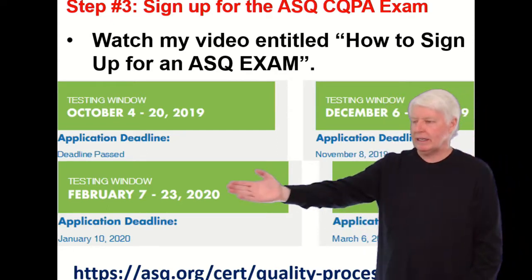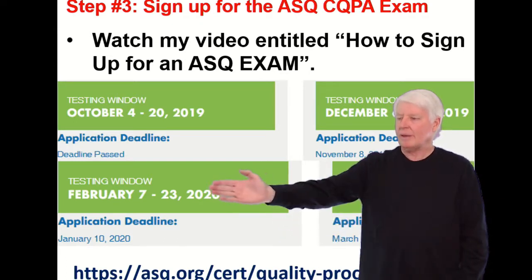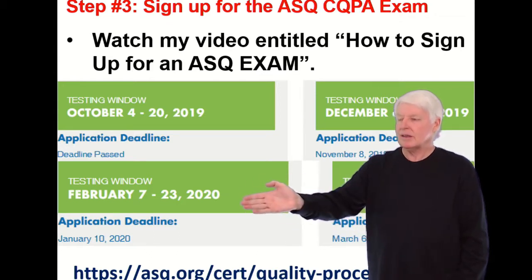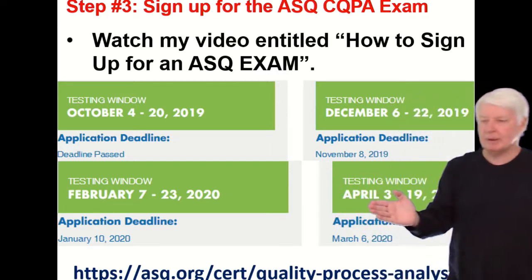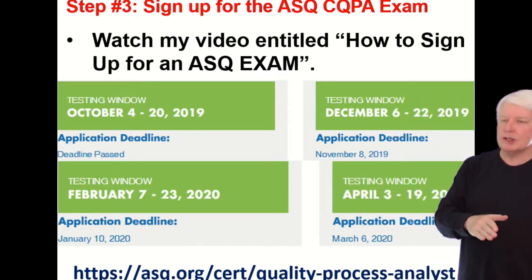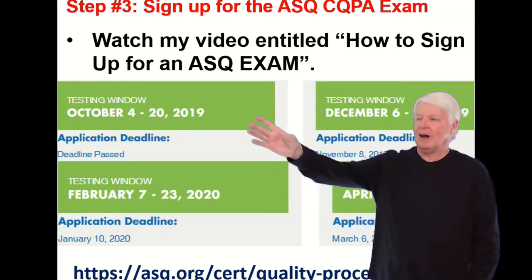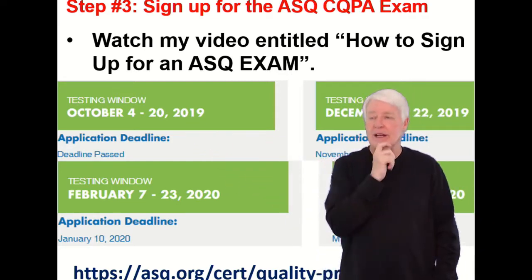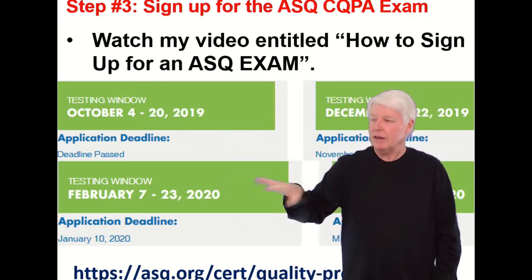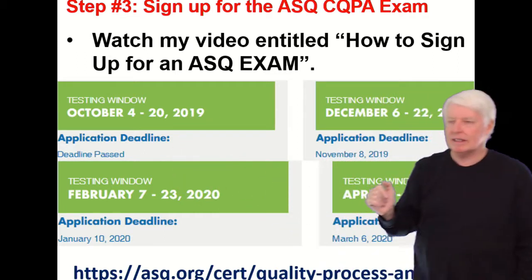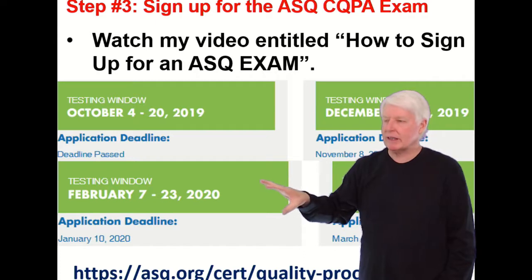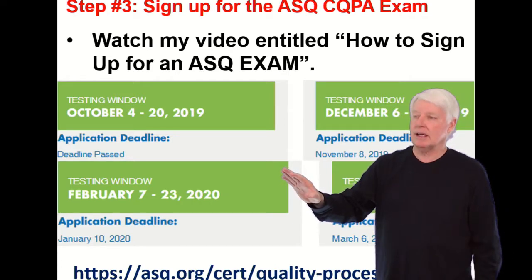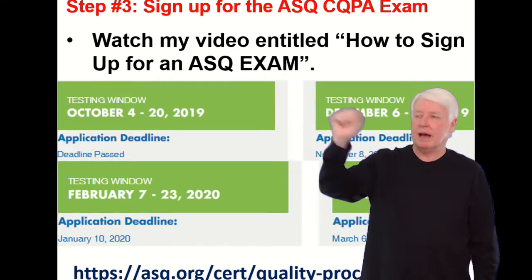This one is on the February time schedule. ASQ tests on the CQPA every other month starting with February — so it's February, skip March, then April, skip May, then June, and so on, every other month. I know by the time you listen to this these dates will be obsolete. However, just remember every other month, and it's usually the first or second week when it starts, then it goes for a couple of weeks. Listen to the video 'How to Sign Up for an ASQ Exam' for details.